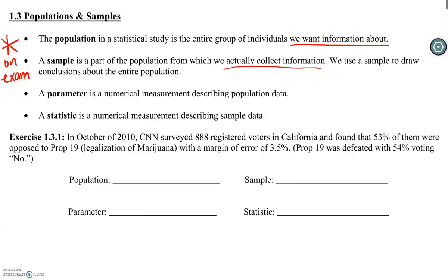The next two definitions are new to us for this course: parameter and statistic. Both of these definitions are measurements from a particular group of people. The parameter is from the population, and a statistic is a measurement from the sample. Easy enough for the test — P goes with P, S goes with S to remember which is which.